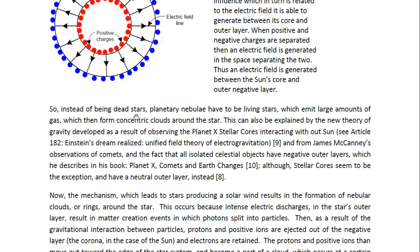So instead of being dead stars, planetary nebulae have to be living stars which emit large amounts of gas, which then form concentric clouds around the star. This can also be explained by the new theory of gravity developed as a result of observing the Planet X stellar cores interacting with our sun. And you may look at article 182 entitled Einstein's Dream Realized, Unified Field Theory of Electrogravitation. And from James McKinney's observation of comets, and the fact that all isolated celestial objects have negative outer layers, which he describes in his book entitled Planet X, Comets and Earth Changes. Although stellar cores seem to be the exception and have a neutral outer layer instead of a negative one.